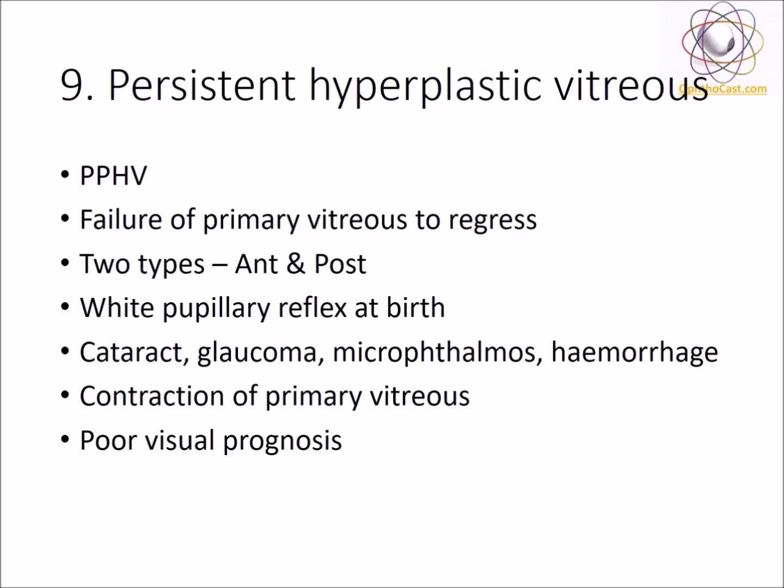Persistent hyperplastic primary vitreous, or PHPV, is a developmental error where there is a failure of the primary vitreous to regress. It can be of two types — anterior or posterior — depending on the origin and location of the remnants. PHPV is one of the causes of leukocoria at birth. It is associated with cataract, glaucoma, microphthalmia, and hemorrhages. Prognosis is poor in such cases.